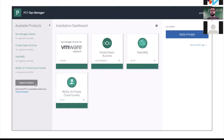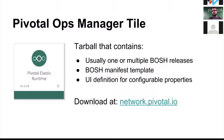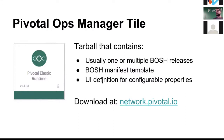What's inside the tile? It's basically a tarball that usually contains at least one BOSH release, sometimes multiple. There's also a BOSH manifest template — and it's important that it's a template, not a static pre-made manifest. It has placeholders for configurable properties, which you can configure in the Rails app UI. The tile has a definition for those UI elements in it.